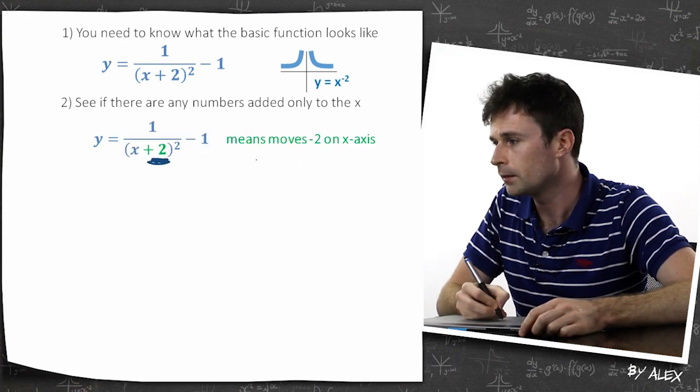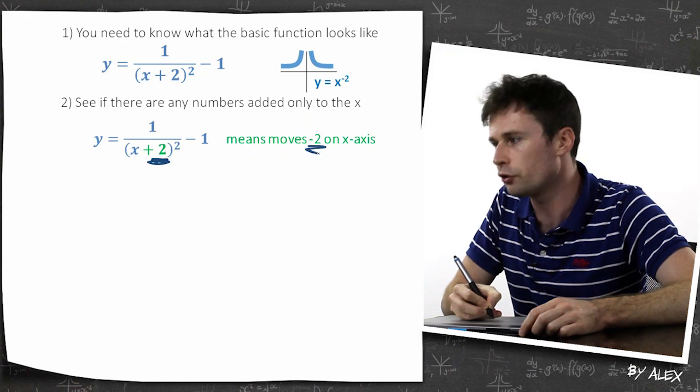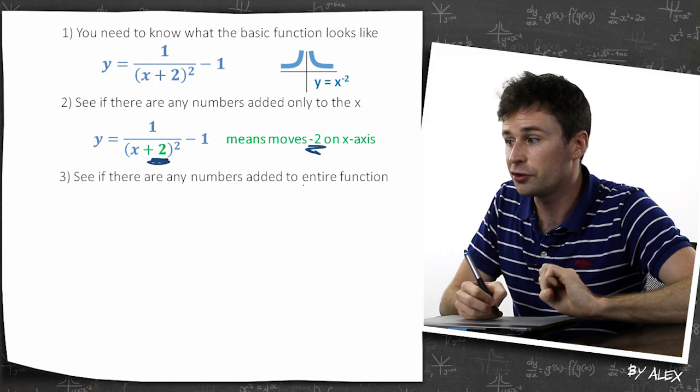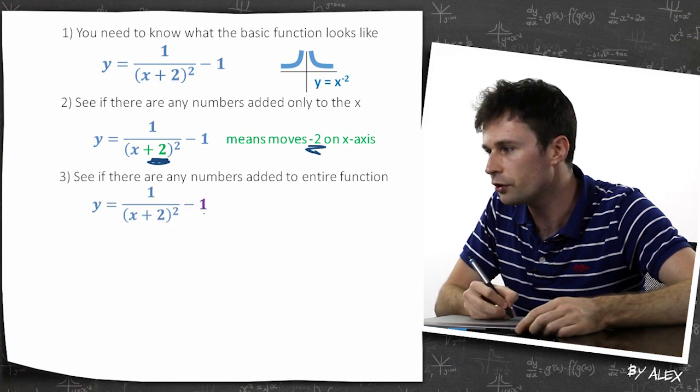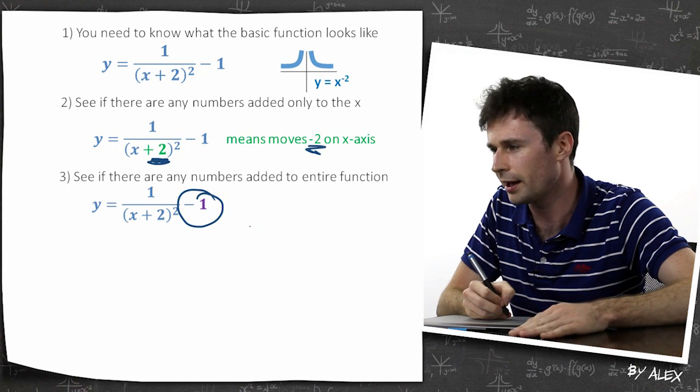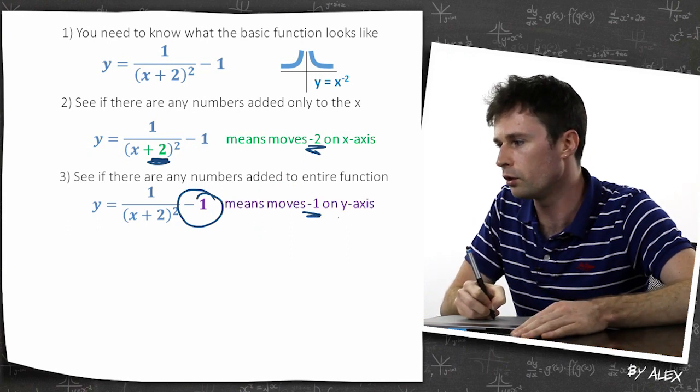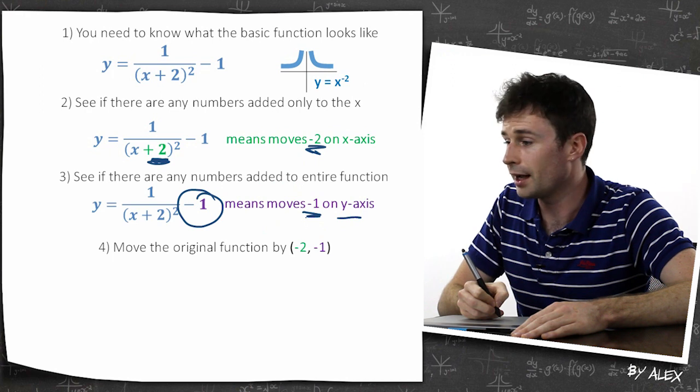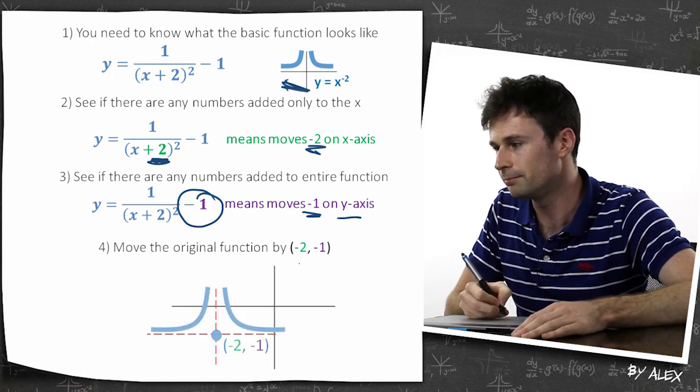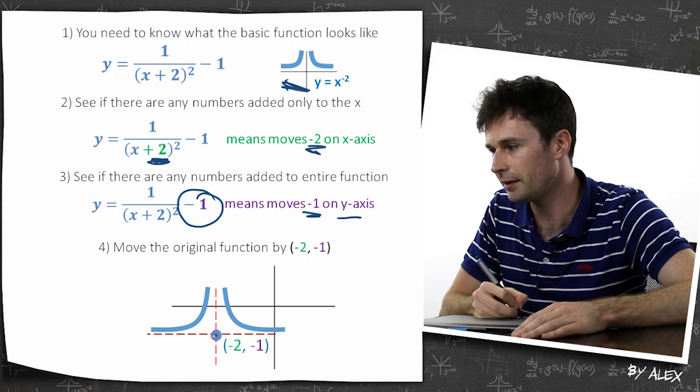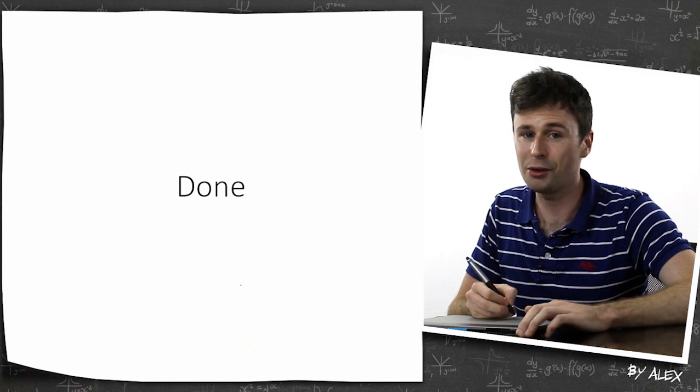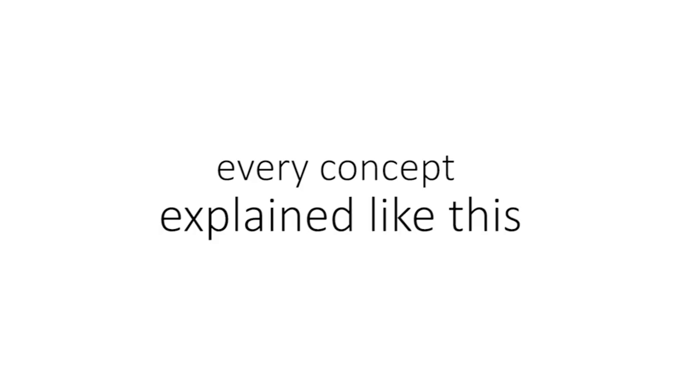Then we need to see if there are any numbers added only to the x. And there are. There's a 2. So that means it's moved negative 2 on the x-axis. Remember, when it's next to the x, it's opposite. See if there's any numbers added to the entire function. And there is right here. This is added to the entire function. If you can sort of understand that, it means it moves negative 1 on the y-axis. So all we have to do is get this original function up here and move it by negative 2, negative 1. And there it is. Same thing, just moved over a little bit. That's it. I hope this helps you with drawing basic functions. Thank you.